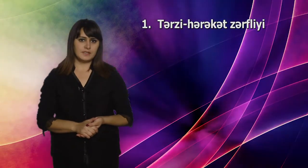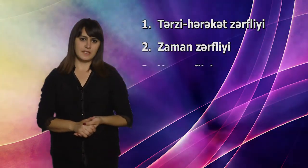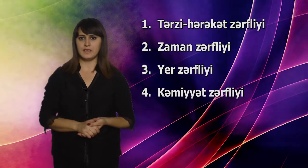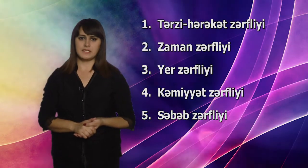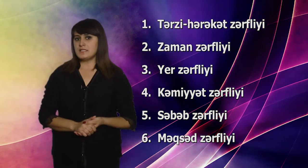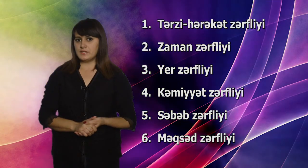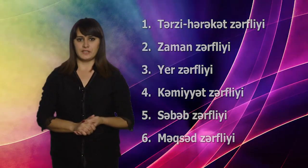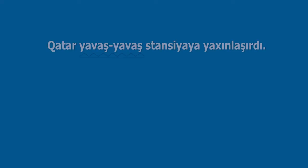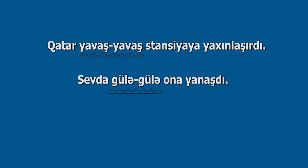Zərfliyin mənaca növləri bunlardır: tərzi-hərəkət zərfliyi, zaman zərfliyi, yer zərfliyi, kəmiyyət zərfliyi, səbəb zərfliyi, məqsəd zərfliyi. Tərzi-hərəkət zərfliyi işin, hərəkətin icra tərzini bildirir və necə, nə cür, nə tərzdə, nə vəziyyətdə suallarından birinə cavab verir. Nümunələr: Qatar yavaş-yavaş stansiyaya yaxınlaşırdı. Sevda gülə-gülə ona yanaşdı.